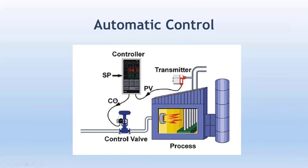Based on the error, the controller sends a CO — Control Output — signal to the control valve. The control valve, based on what is decided by the controller, opens or closes as needed to maintain the set point value as the PV. The CO is connected to the control valve to regulate it based on the process need.